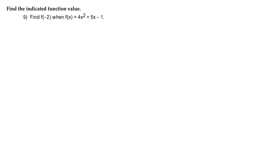Here we have number 9 where the instructions are to find the indicated function value. Number 9 reads, find f of negative 2 when f of x equals 4x squared plus 5x minus 1.